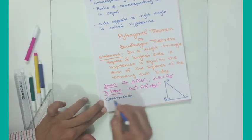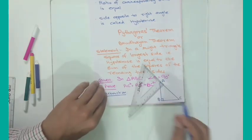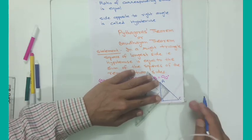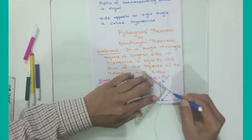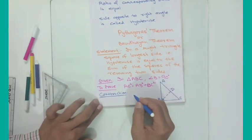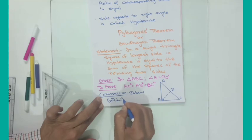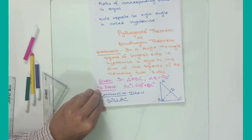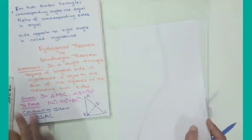Now we write down the construction. In order to prove the theorem we draw a perpendicular to AC from B. This perpendicular is shown as a dotted line. The foot of the perpendicular is called D. So the construction is: draw BD perpendicular to AC. Now let us proceed with the proof of this theorem.